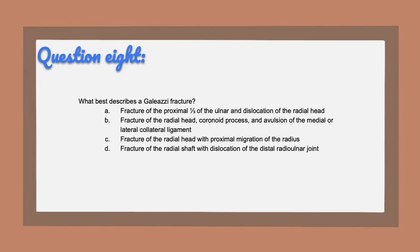Question eight: what best describes a Galeazzi fracture? A, fracture of the proximal third of the ulna and dislocation of the radial head. B, fracture of the radial head, coronoid process, and avulsion of the medial or lateral collateral ligament. C, fracture of the radial head with proximal migration of the radius. Or D, fracture of the radial shaft with dislocation of the distal radial-ulnar joint.